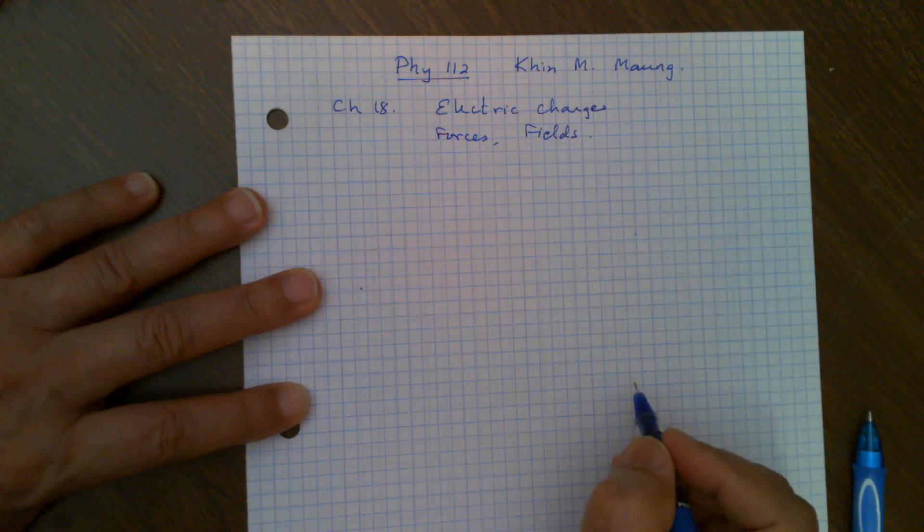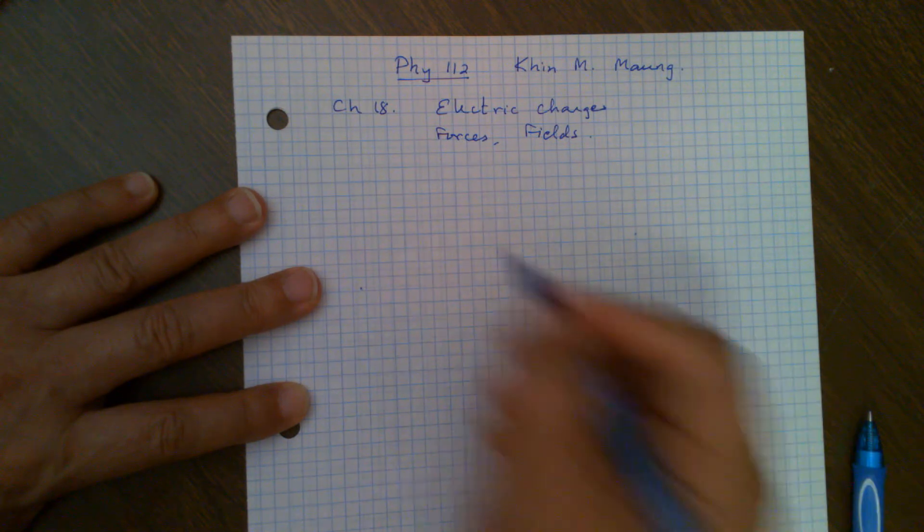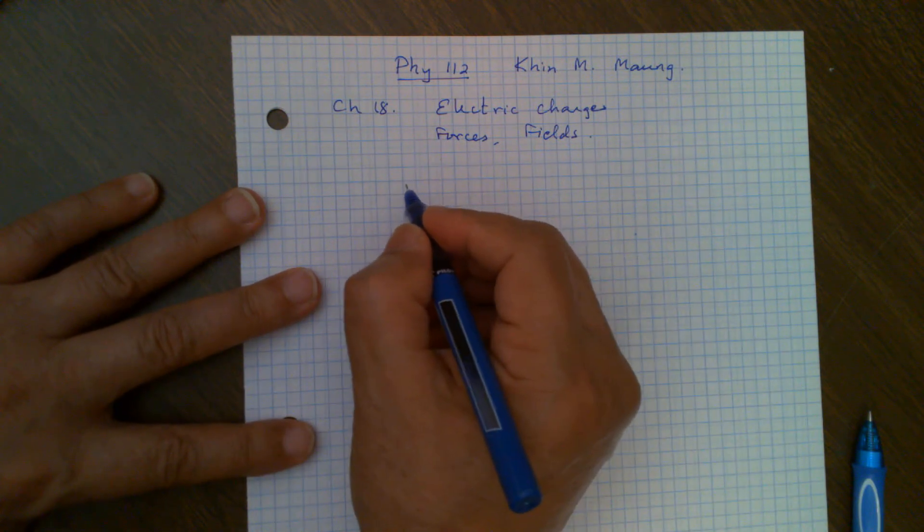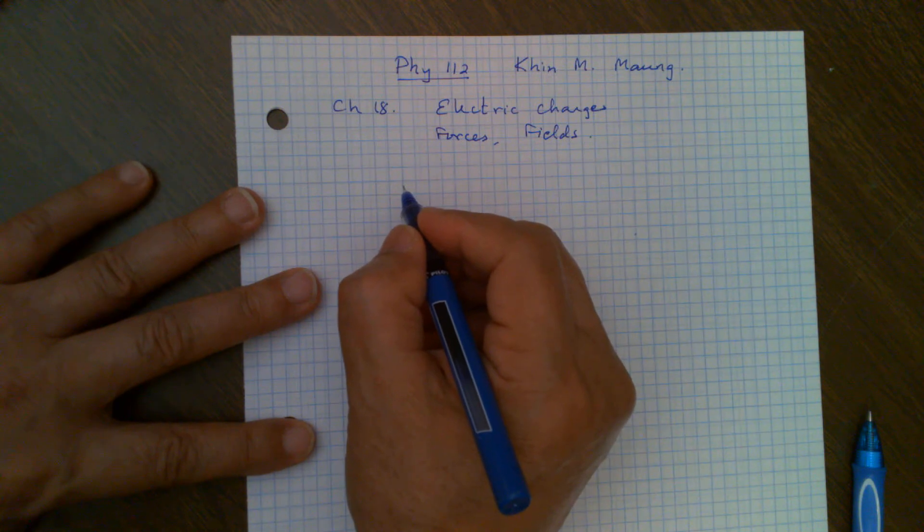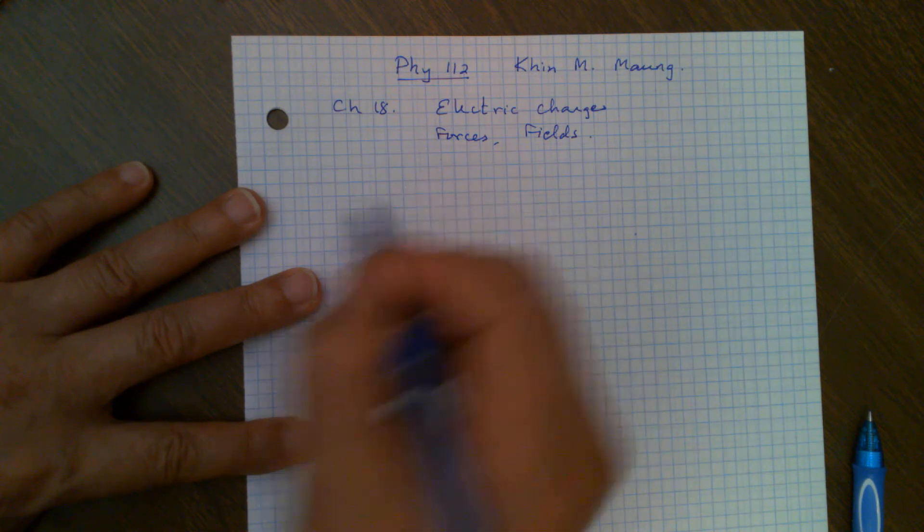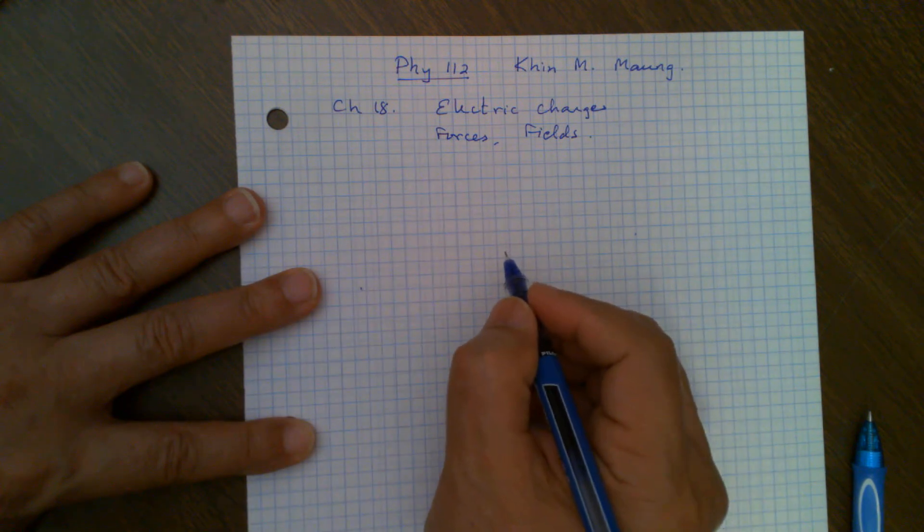And then we will need to know how to add these forces and electric fields to find something called resultant forces or resultant fields. So in order to do that, we need to know how to add vectors. What are vectors? You should already know about this from Part 1 of this book, but I am going to review it a little bit so that you will not be totally lost.